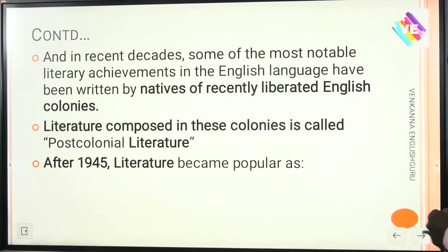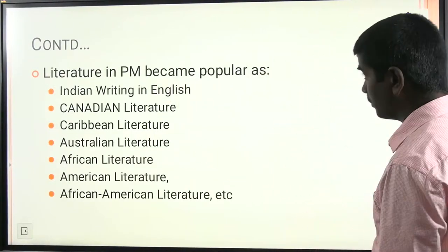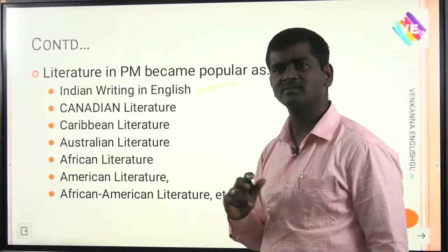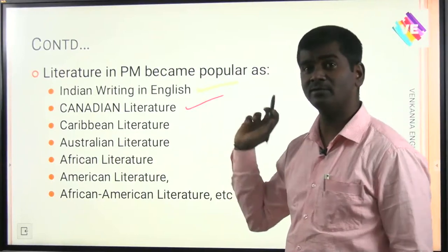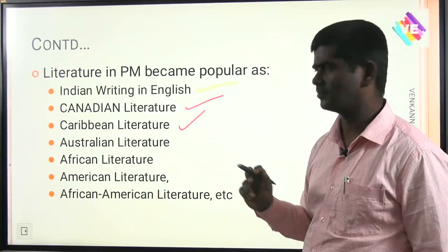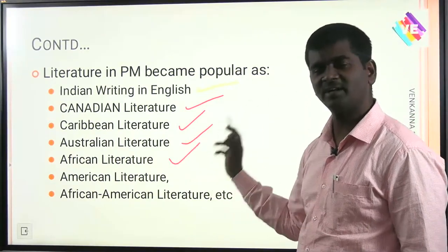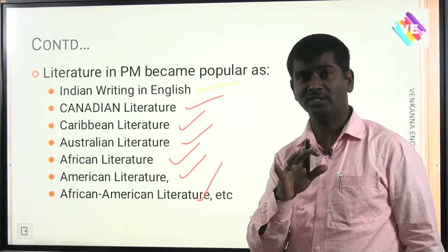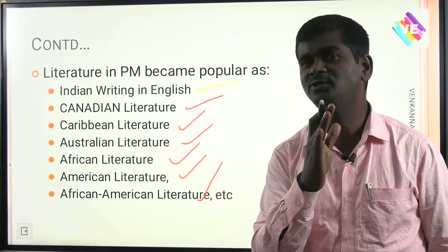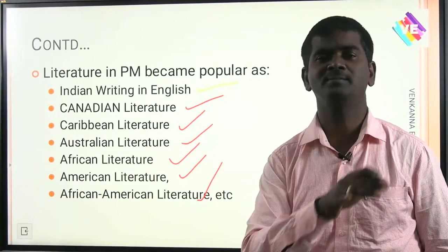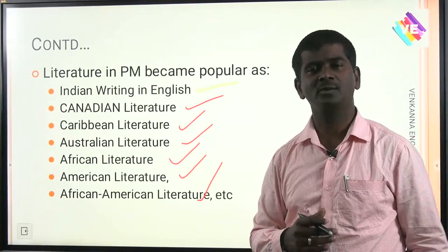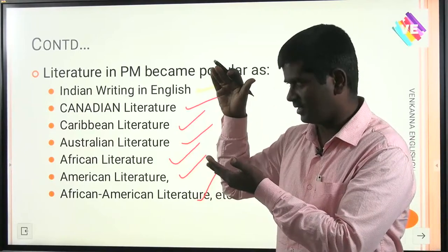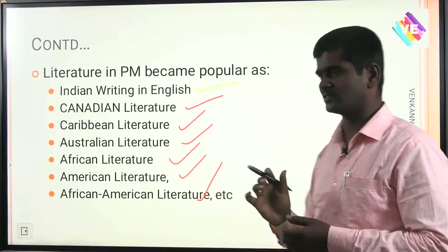After 1945, literature became popular under different names. In the post-modern period it became popular as Indian Writing in English, Canadian literature, Caribbean literature, African American literature. These were the terms which became popular only during post-modernism, not before. The concept of English literature became popular under these different subtitles.